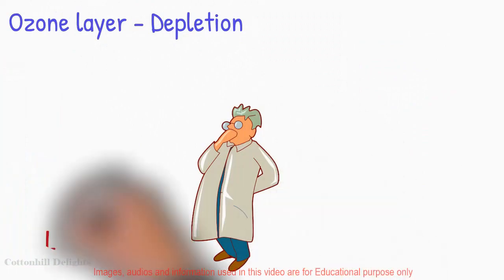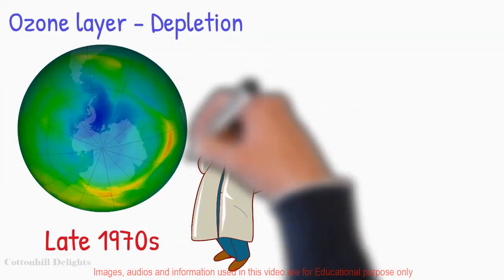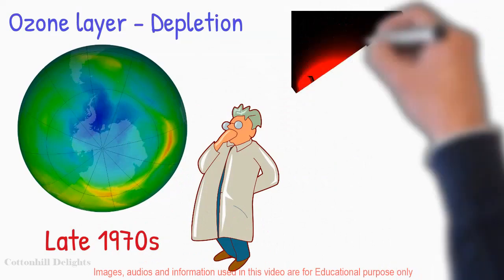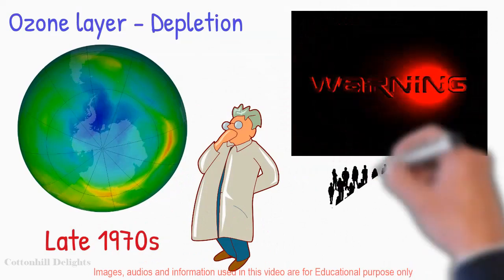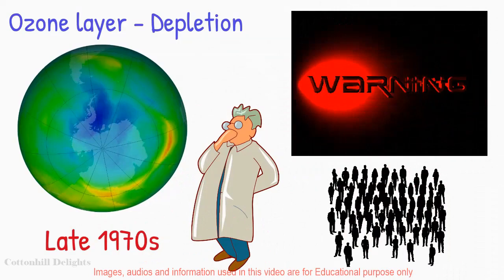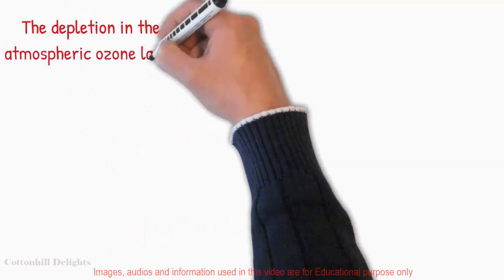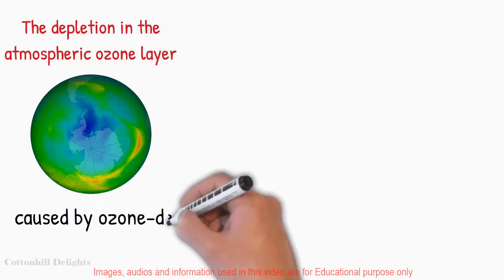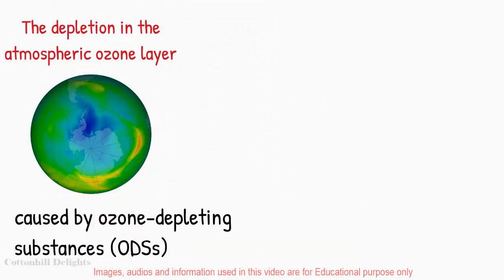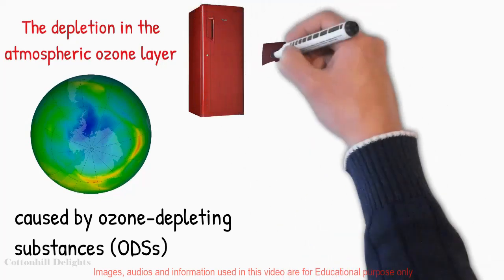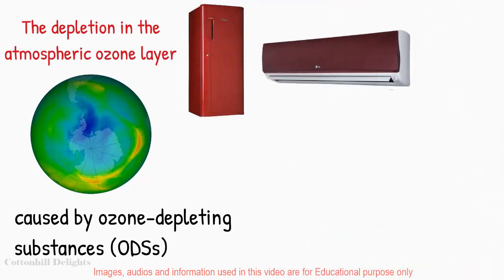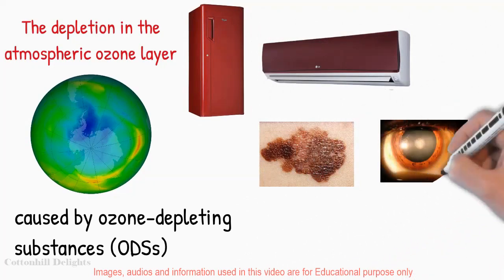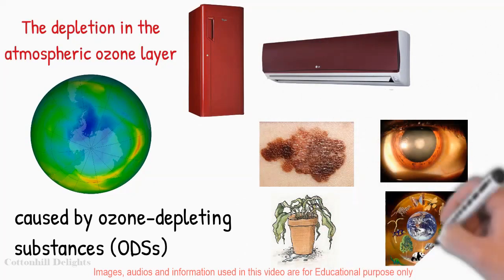Depletion. When scientists working in the late 1970s discovered that humanity was creating a hole in this protective shield, they raised the alarm. The global response was decisive. The depletion in the atmospheric ozone layer is called the ozone hole. The hole, caused by ozone depleting substances (ODSs) used in aerosols and cooling such as refrigerators and air conditioners, was threatening to increase cases of skin cancer and cataracts, and damaged plants, crops, and ecosystems.